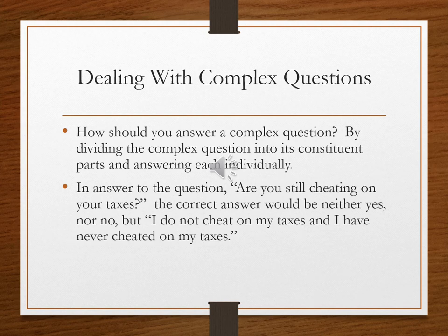Clever people will often try to trap us by means of a complex question into making an admission we ordinarily may not want to make. The reason these are called complex questions is not because they're complicated — it's because they're combinations of two questions disguised as a single question. So the question 'are you still cheating on your taxes?' is a complex question. It's two questions in one: have you ever cheated on your taxes, and are you currently cheating on your taxes?